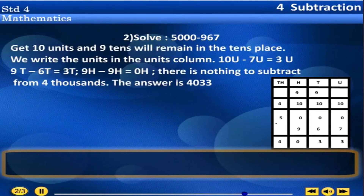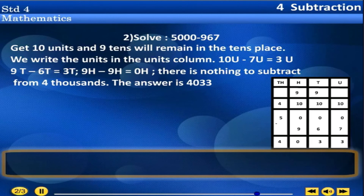We write the units in the units column. 10 units minus 7 units is equal to 3 units. 9 tens minus 6 tens is equal to 3 tens. 900 minus 900 is equal to 0. There is nothing to subtract from 4000. The answer is 4033.